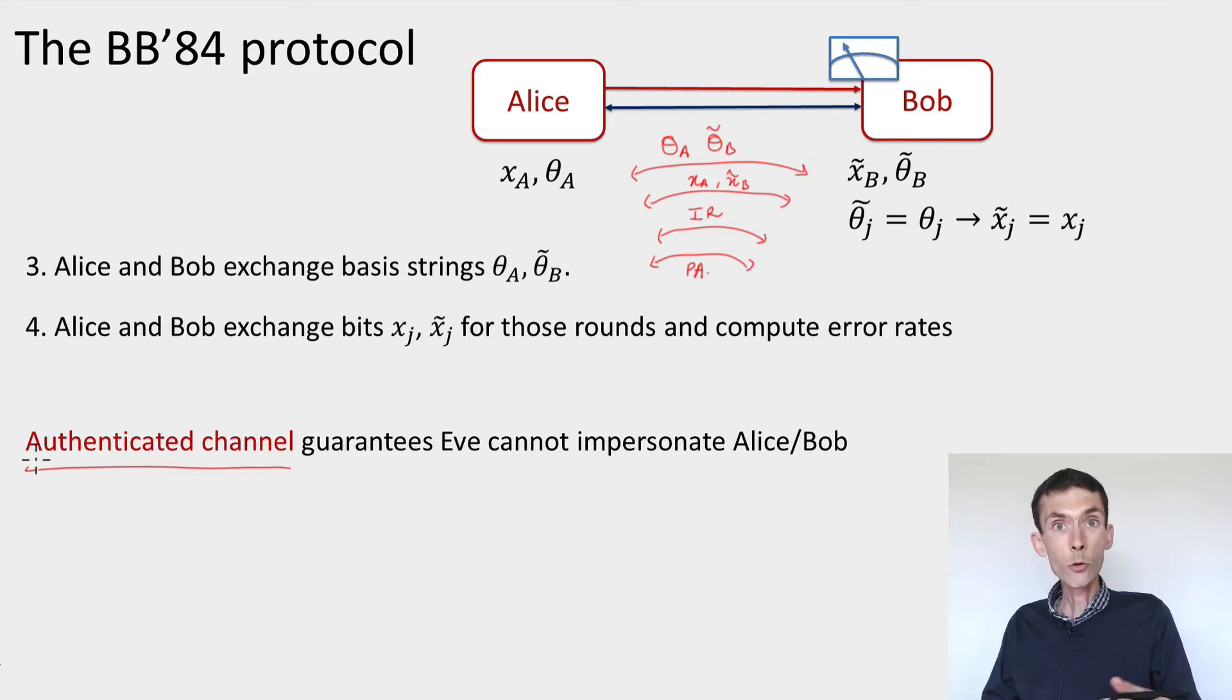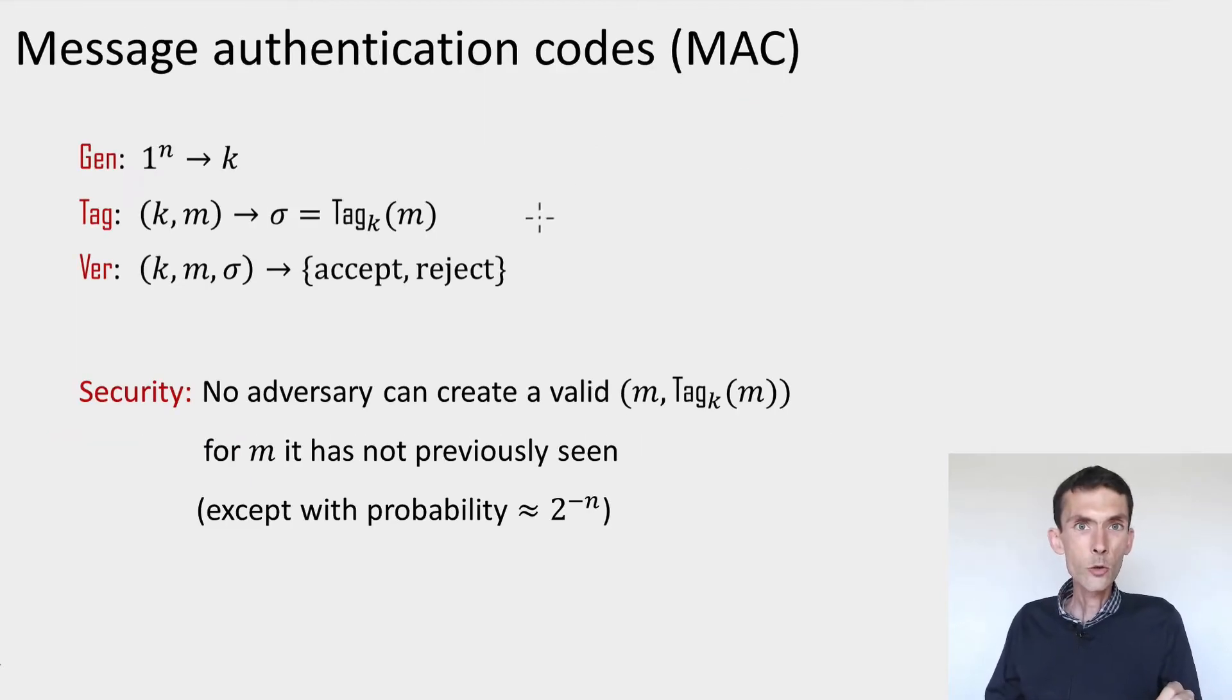So this authentication is an important assumption for our protocol to be secure. And the question is, how do you establish an authenticated channel? Let me tell you how this can be done. The main idea is to use a cryptographic primitive that's a completely classical primitive called the message authentication code. It has three parts. The first part is a key generation procedure where k is called the key. The input to that procedure is just a length parameter n. This n is called the security parameter.